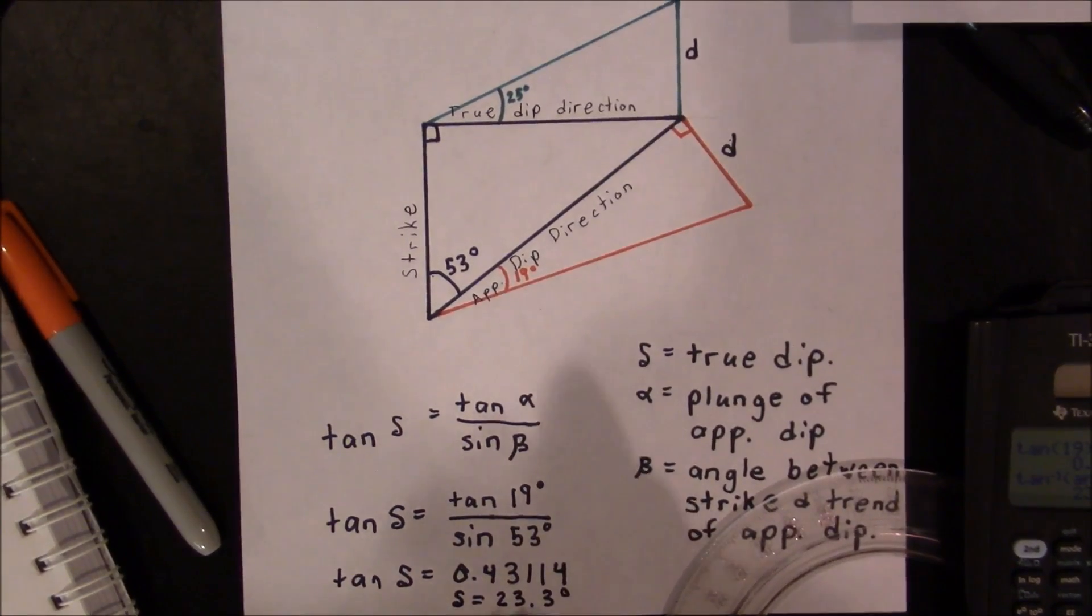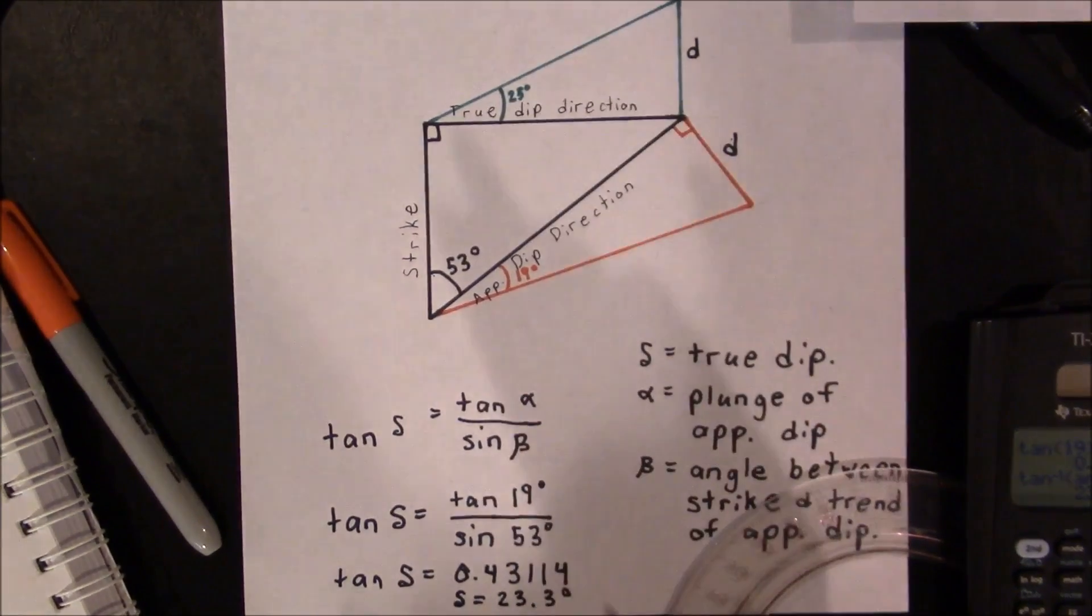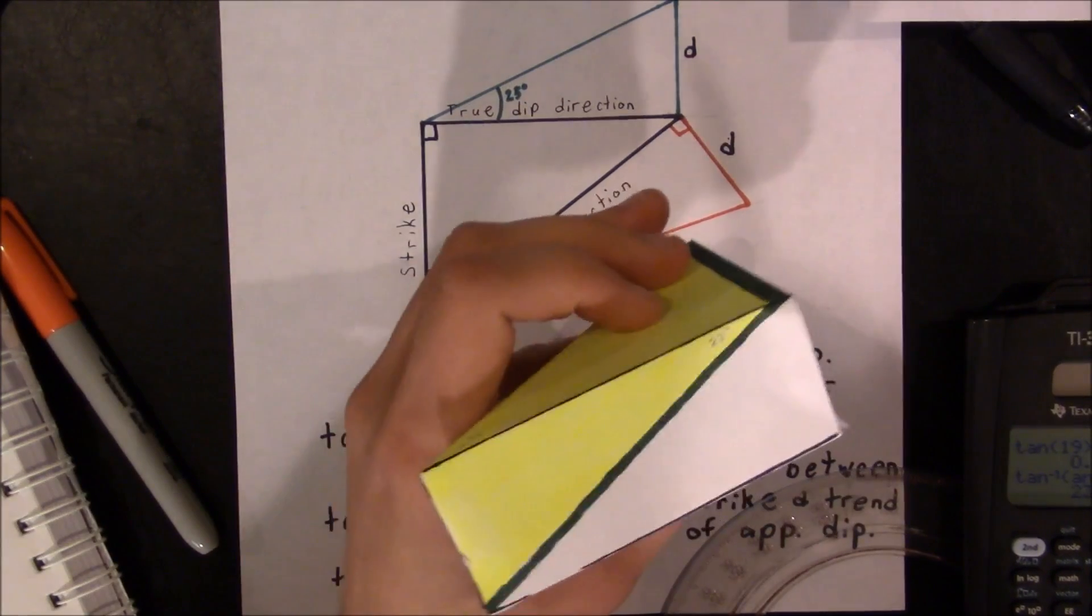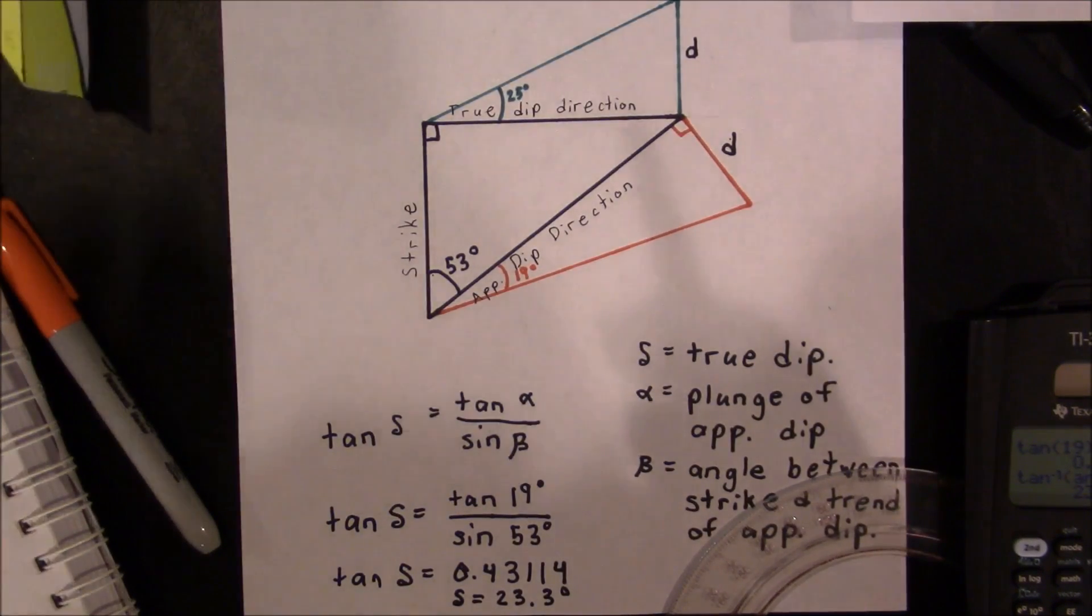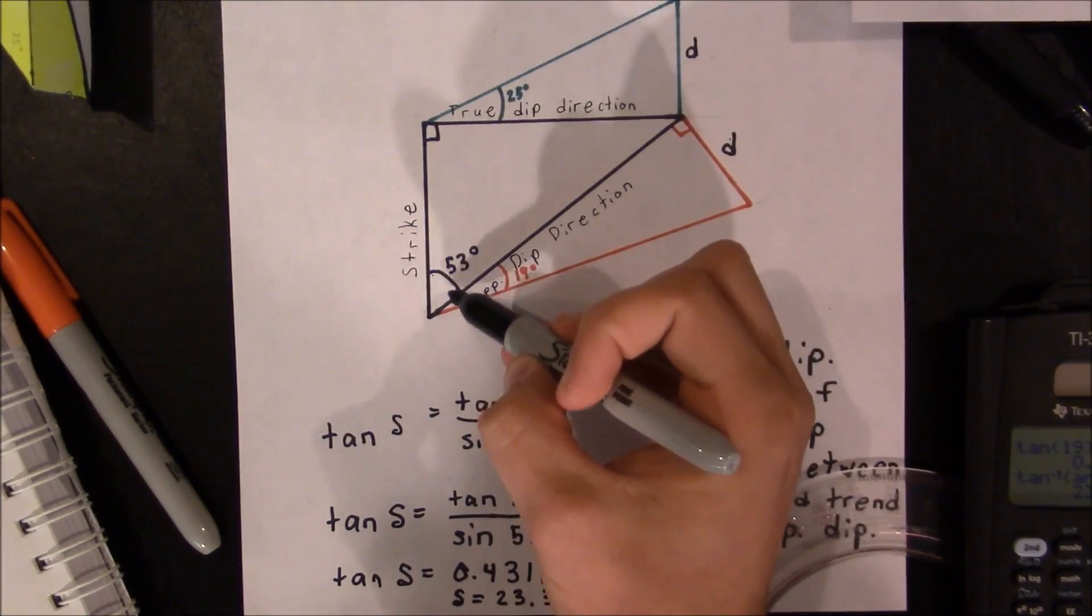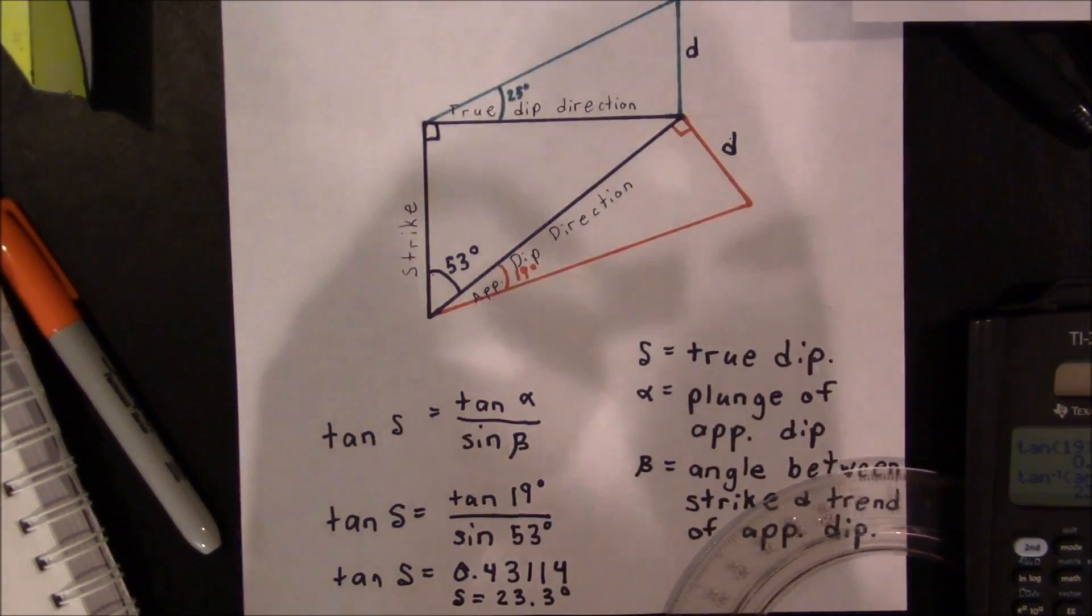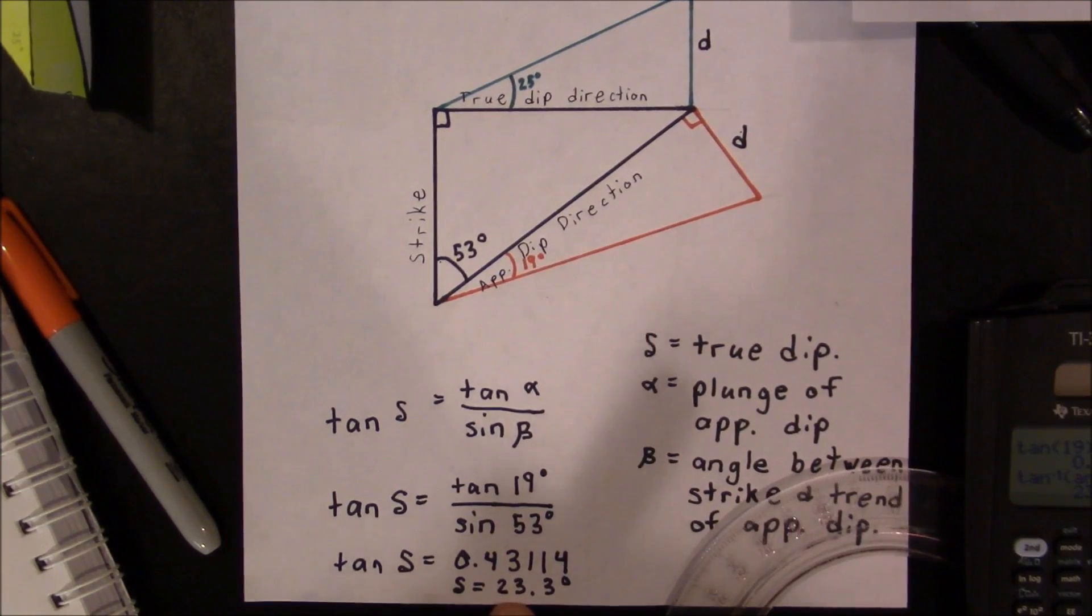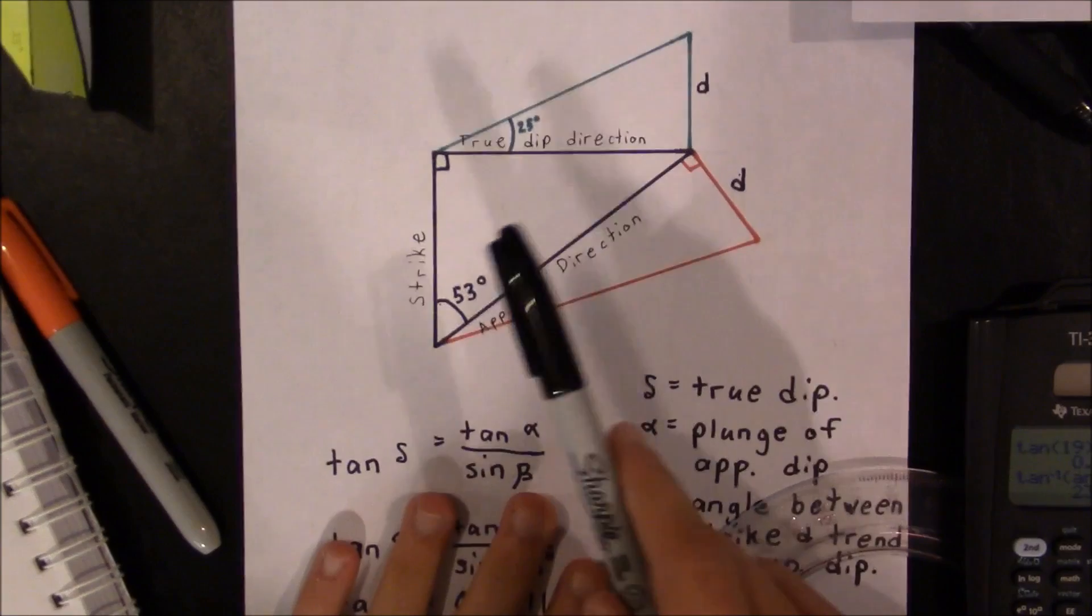And if we take the inverse tangent of that number, we get 23.3 degrees. So this answer is pretty close to what we've gotten up here. It's also pretty close to what I've physically measured on my block model. And so what we're going to have to conclude is that no method is perfect because there's always a certain degree of measurement. I had to measure this 53 degrees. I had to measure this 19 degrees. There's always something that can be just a little bit off, and as such, there's going to be some degree of error. In this case, I get 23.3 degrees, and this was probably a lot simpler method than physically drawing everything out up here.